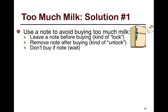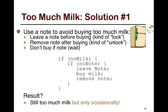The first solution uses a note. We're not using a lock, but we'll use a note. You leave a note before buying — similar to a lock. You remove the note after buying, similar to unlock. And don't buy if the note exists. The program looks like: if no milk, if no note, leave the note, buy milk, remove the note. Unfortunately, the result is that there's still too much milk, but only occasionally.